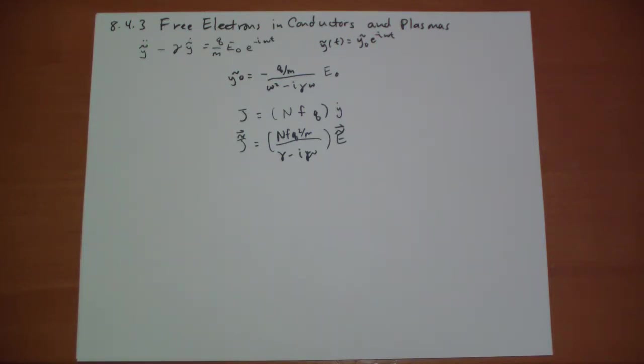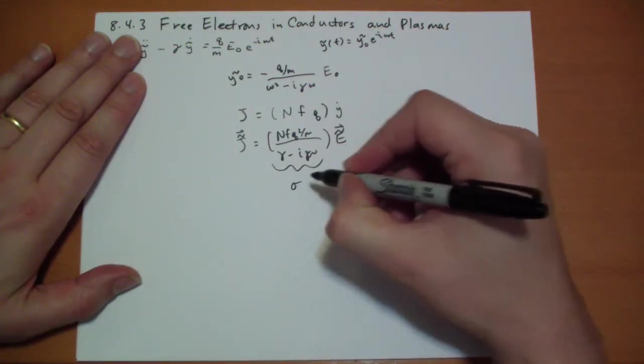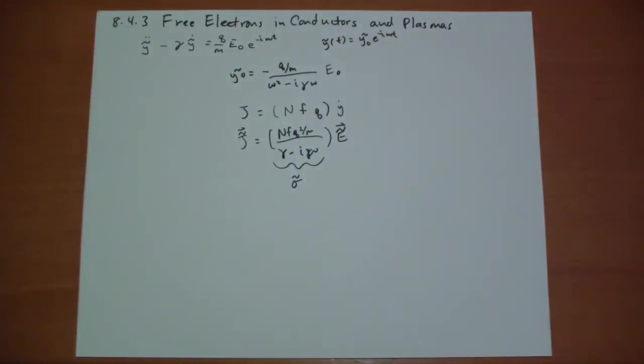What happened? Yeah, because it's the time derivative of y. So this right here plays the role of sigma, but now we have a complex sigma.